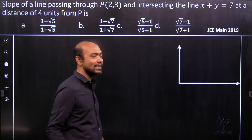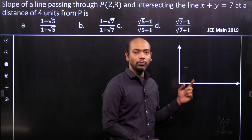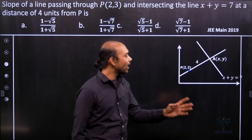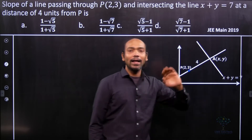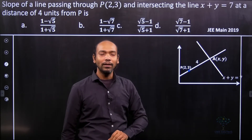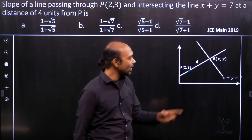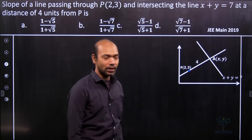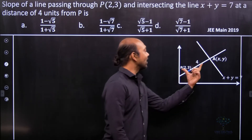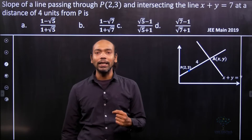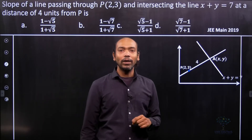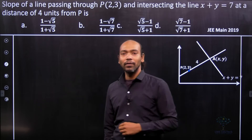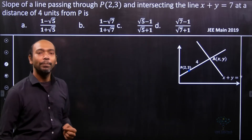So we draw the x-axis and y-axis, take the point (2, 3), and we draw a line. This line intersects the line x + y = 7 at point A. So this is my point of intersection. It is given that PA is actually 4 units. Now we have to find the slope of this line — the slope of line PA.